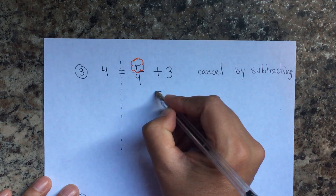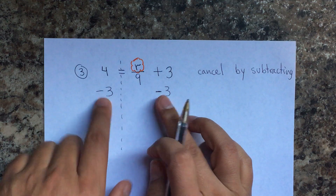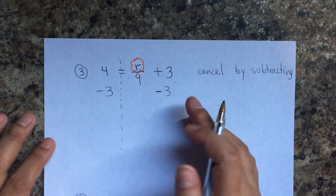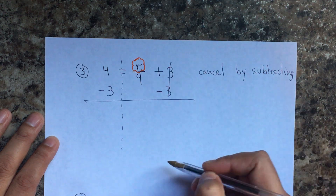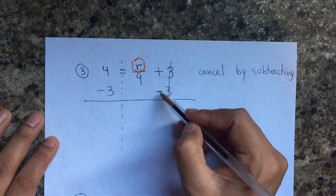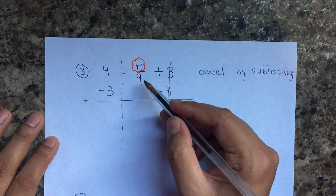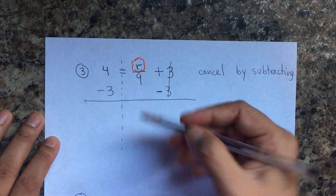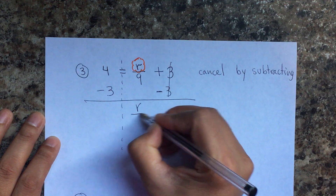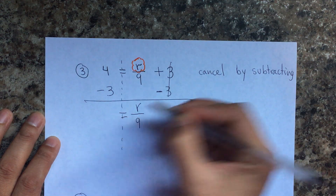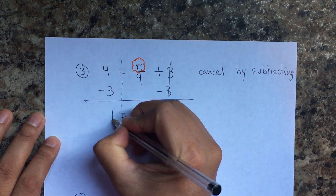Adding three — the opposite is to subtract three from both sides. Remember: both sides of the equal sign. Three minus three is zero. In addition and subtraction, they cancel because the answer is zero; in multiplication and division, they cancel because the answer is one. So r divided by nine equals four minus three, which is one.